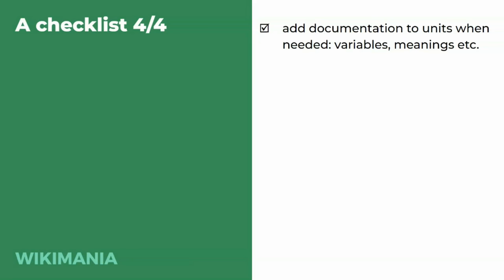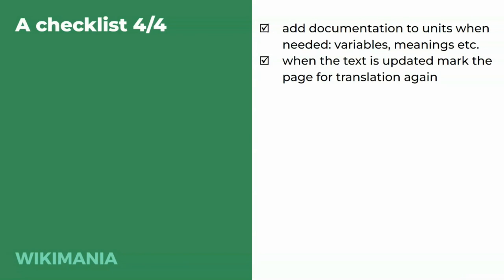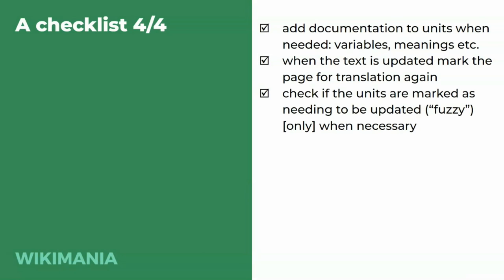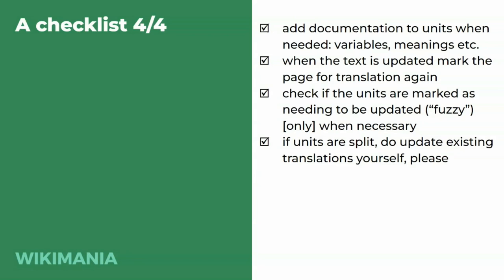Adding documentation has already been mentioned. When the text is updated, a translation admin will need to mark the page for translation again so changes in the source text are forwarded to translators. Check if units are marked as needing updating only when necessary — you'll see that as checkboxes when marking the page for translation. If units are split, please update existing translations yourself if you can, because it's a manual and not creative task. If you had two sentences in one unit and now have two separate units, that's something the translation admin splitting the unit can handle more easily than gathering dozens of translators to do it in their own languages.